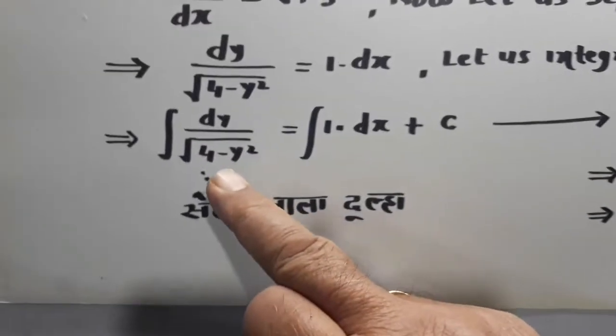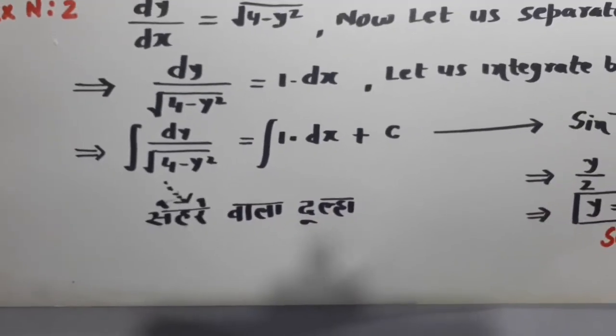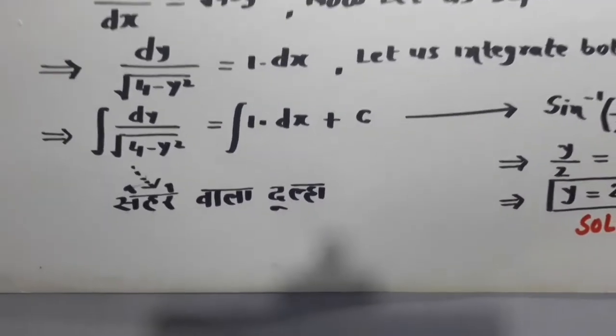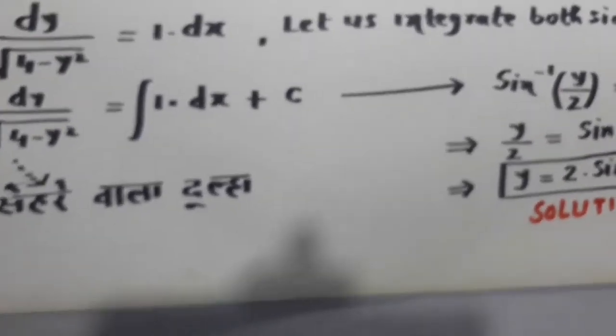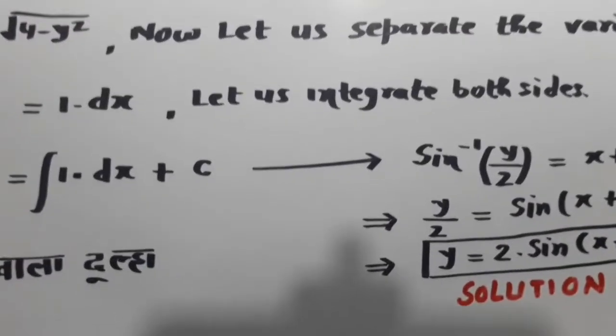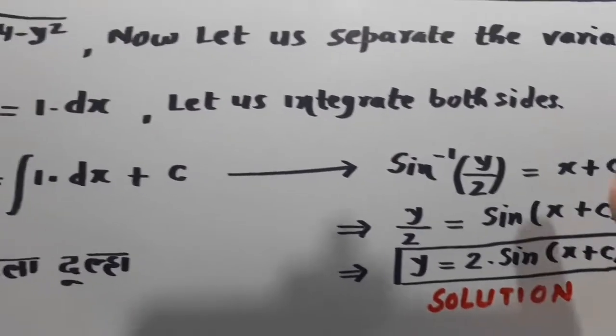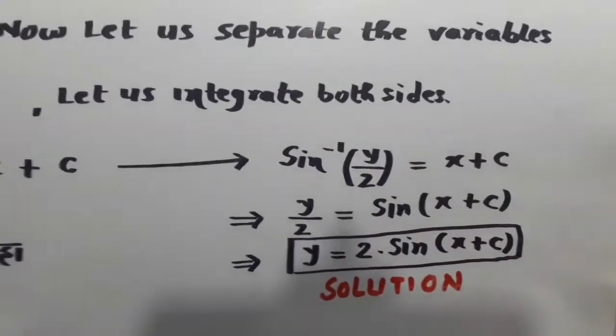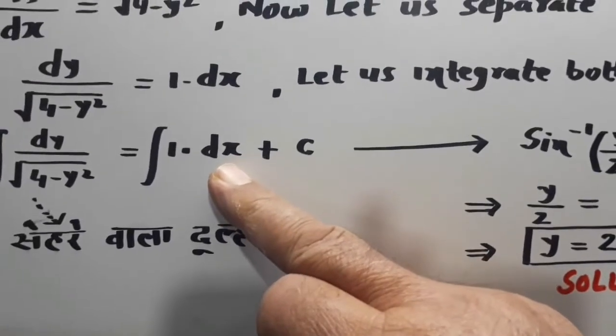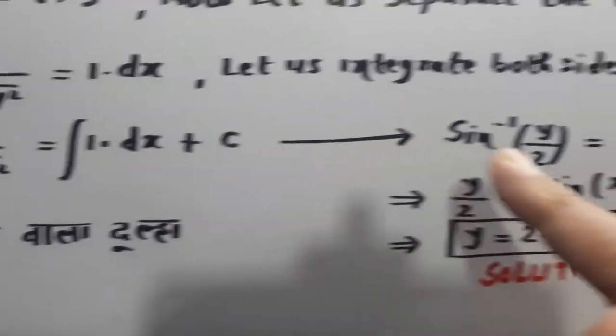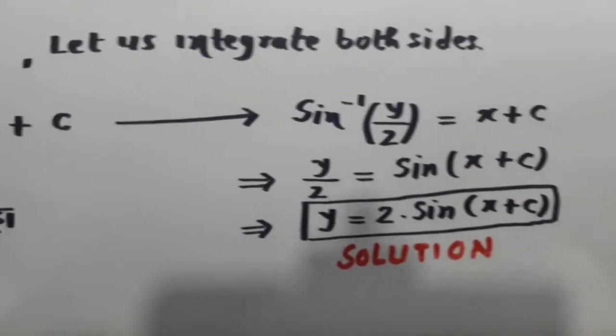So, as per the formula, dy/√(2²-y²) is equal to sin⁻¹(y/2). And on this side, 1 becomes x. Integration of 1 is x + C. So, this is done up.